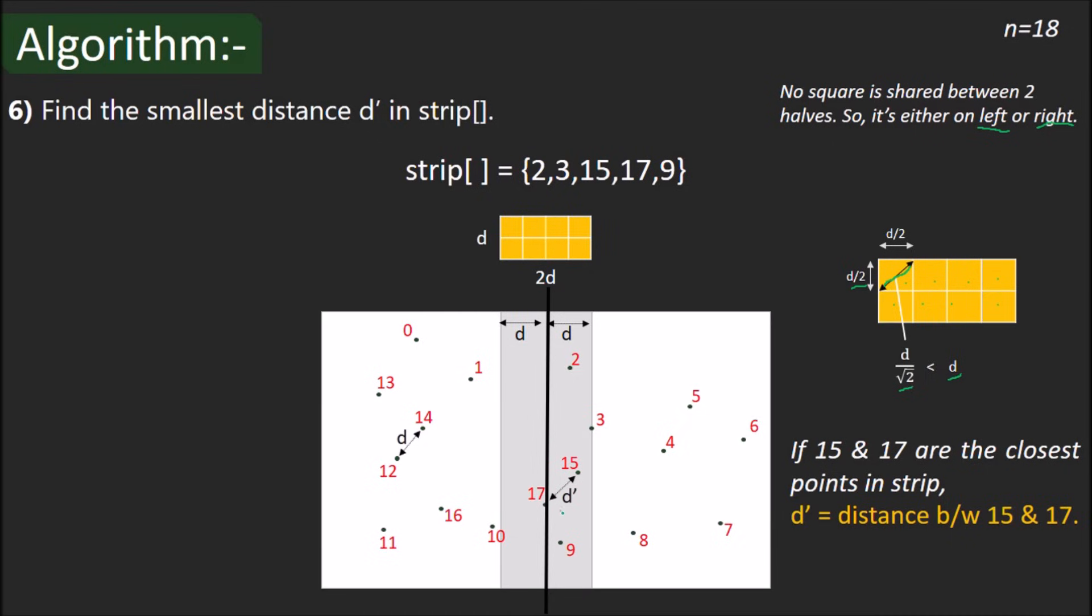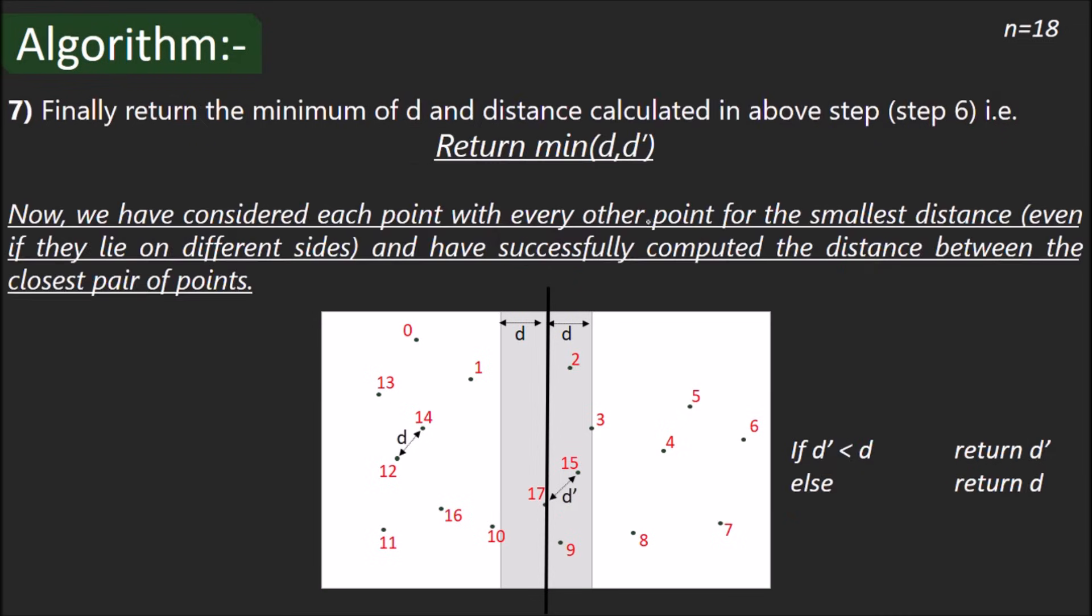d' is the smallest distance between the pair of points in the strip. In this example, if 15 and 17 were the closest pair of points then d' will be the distance between 15 and 17. Hence, the distance between the closest pair of points in the plane is the minimum of d and d'. Let's try understanding the code.